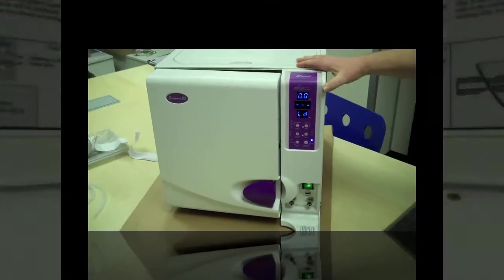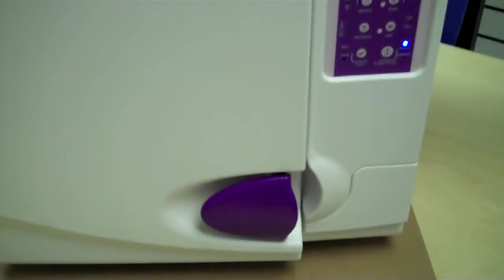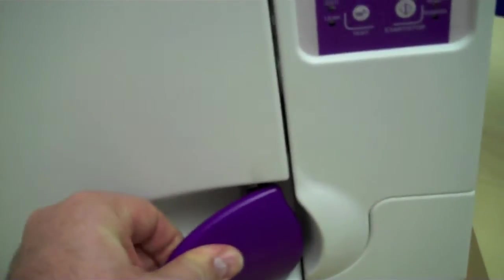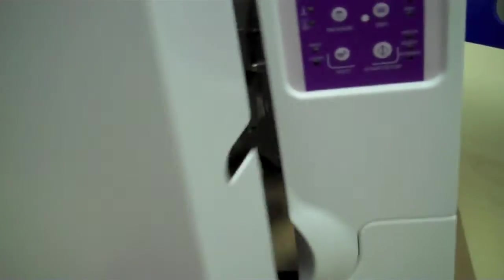You've got two locks: a pressure lock as well as an electronic lock. When the door is closed electronically and you press start, it's locked. Once you get a positive pressure, it is also secondary locked.